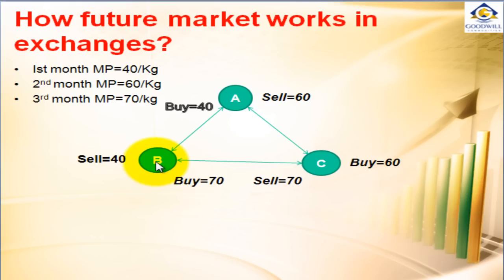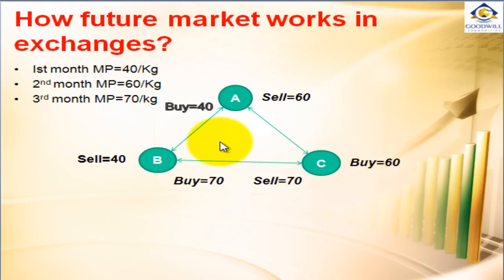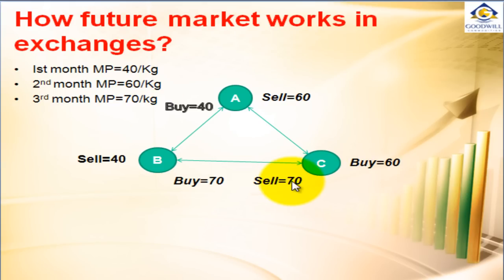At the same time, trader B is not really interested in doing any activity; he still expects that the price can come down. In the third month, when the contract expires, the price of rice was around Rs 70 per kg. Now everybody should close their position because all three parties are not interested in taking any physical delivery of the underlying asset, which is rice. The market price is Rs 70 per kg, so C closed his position at Rs 70 and B also closed his position at Rs 70 per kg.